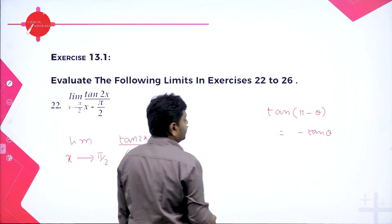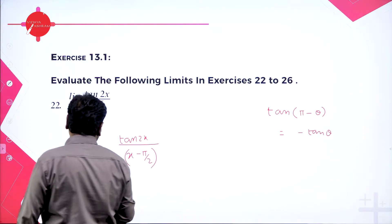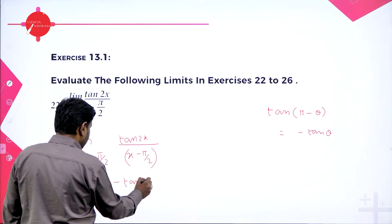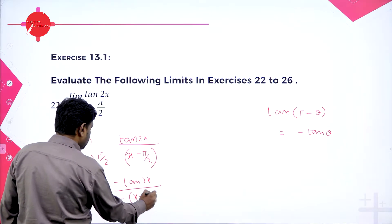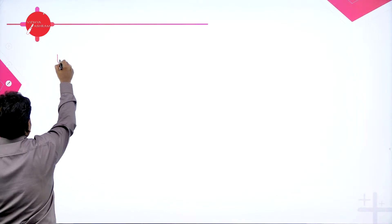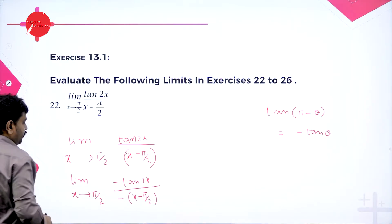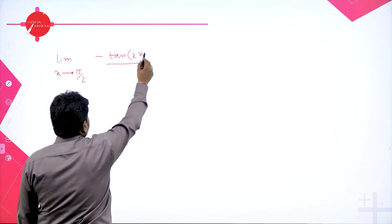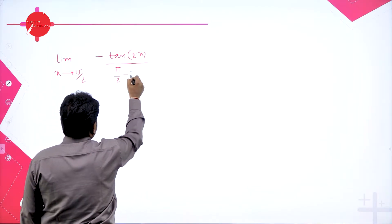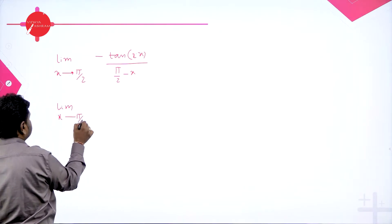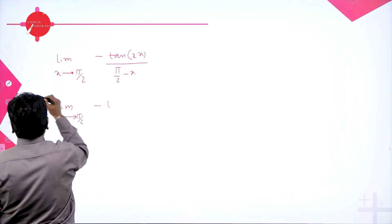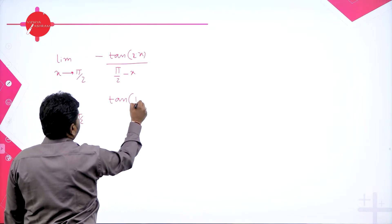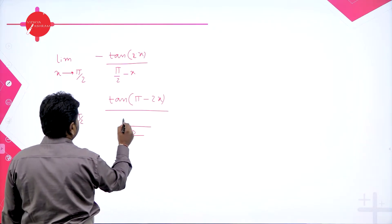So tan(π − θ) = −tan θ. I will introduce a minus in both numerator and denominator. So we get: limit x→π/2 of [−tan 2x] divided by [−(x − π/2)]. Taking the minus inside the denominator gives π/2 − x. Then tan 2x can be written as tan(π − 2x), and the denominator with LCM 2 becomes (π − 2x)/2.